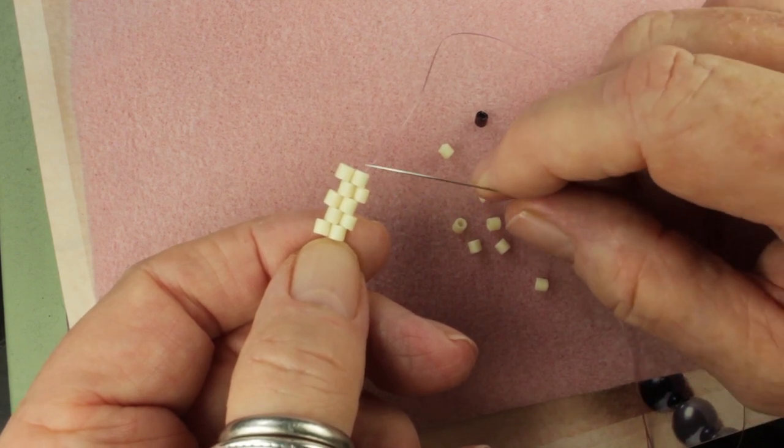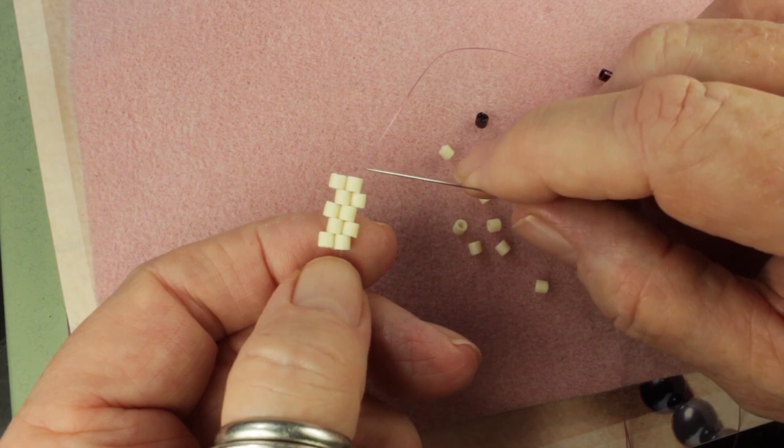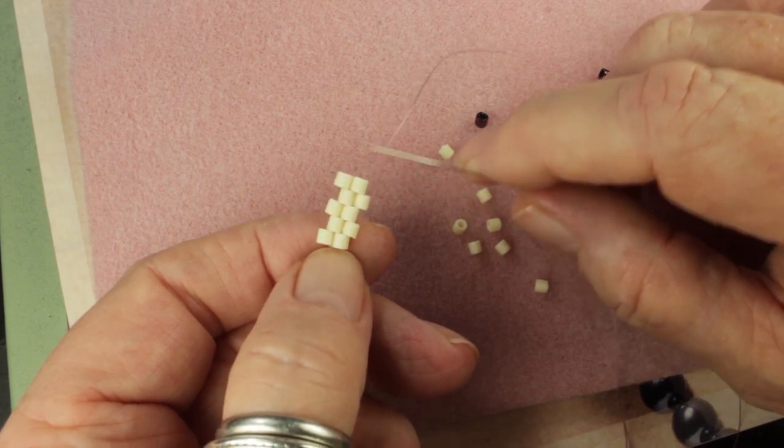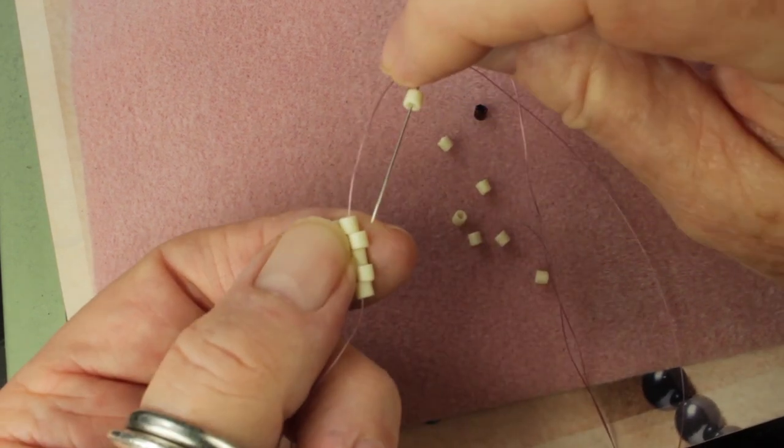But right now, on this end which is not the tail end, you do just a regular turn around to continue your peyote. So I'll do this.